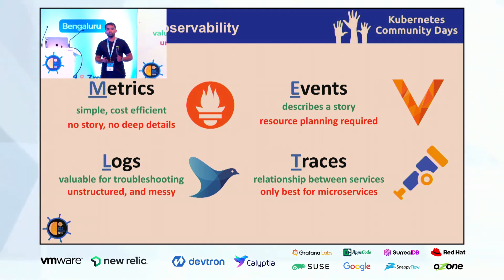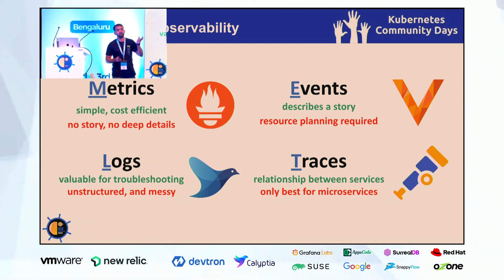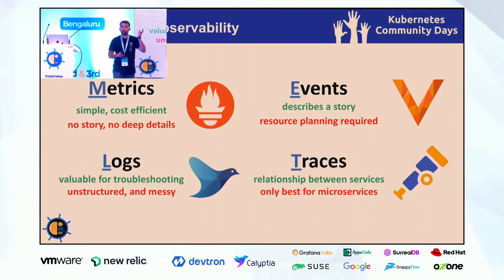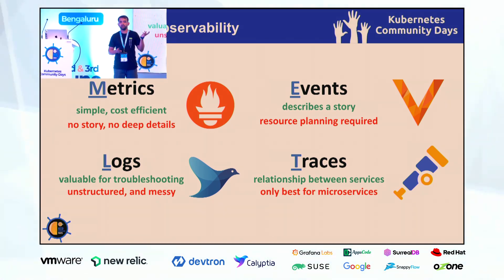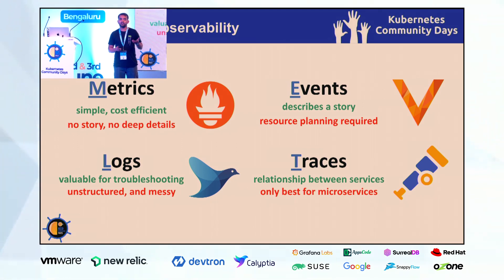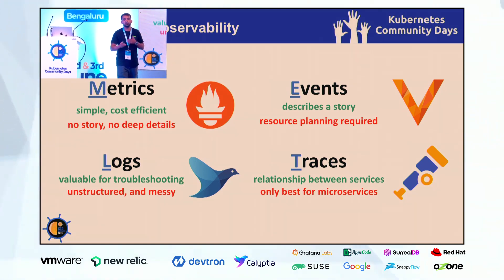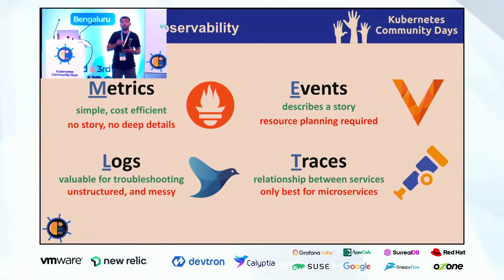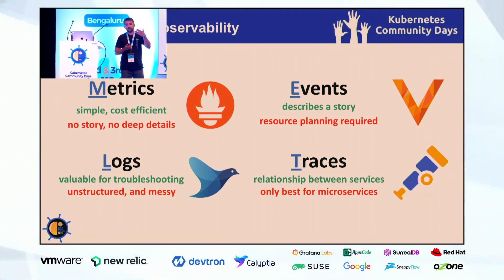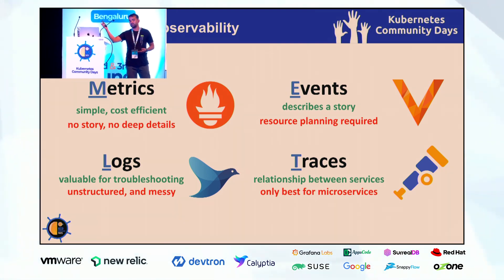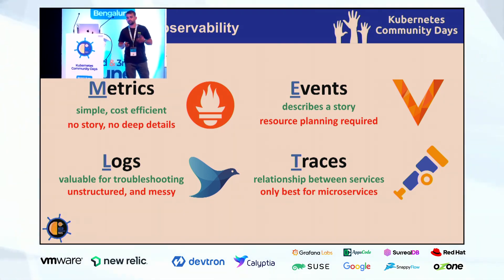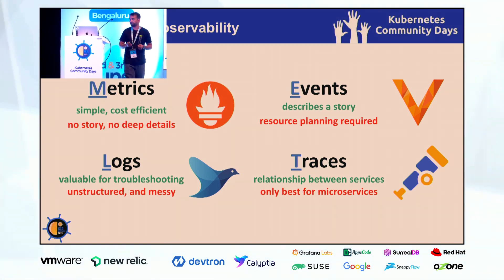Metrics are important to identify what component was spiked, and they can help us in identifying the problem — along with other things, which are events, logs, and traces, which I'll be mentioning next.